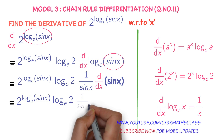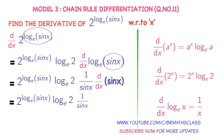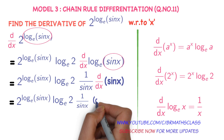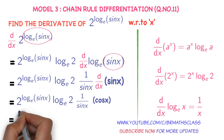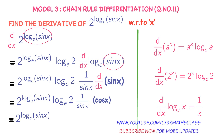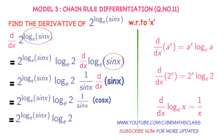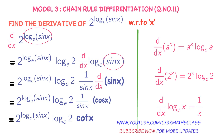We know the direct formula: the derivative of sine x is cos x. So we write it as: 2 power logarithm of sine x base e, into log 2 base e, into cos x divided by sine x. We know that cos x divided by sine x equals cot x, so we write it as cot x.